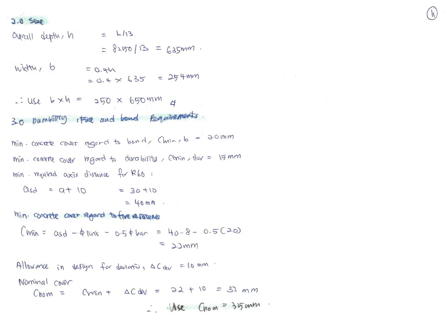To estimate the beam size, use h = L/13 = 8250/13 = 635 mm, and b = 0.4h = 254 mm. Use b × h = 250 × 650 mm. This is within the acceptable preliminary sizing range; slight differences may arise if different values are chosen.